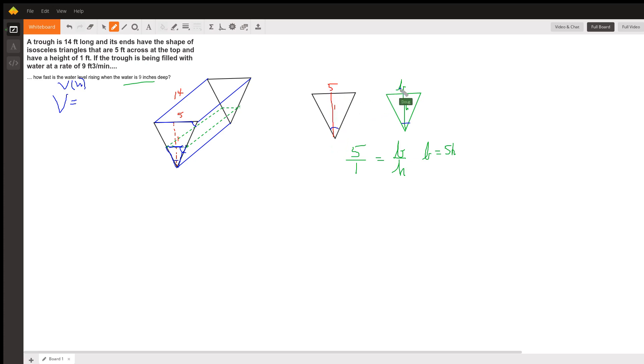and that's true of altitudes also so we can say five is to one as b is to h and then we can solve for b and we will have the base is always five times whatever the height is and the reason we do this is because we want this formula v to depend just on the letter h the volume of this prism is